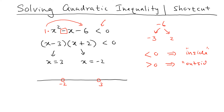This method works when the leading coefficient is positive. If the leading coefficient is negative, multiply the whole inequality by a negative sign first, switch the inequality direction, and then solve. Since this is a less-than inequality, the answer is everything in between, so the solution set is the interval in between the two zeros.